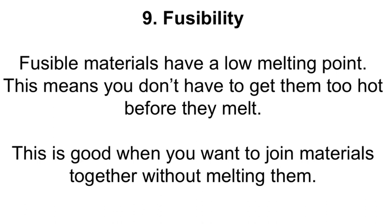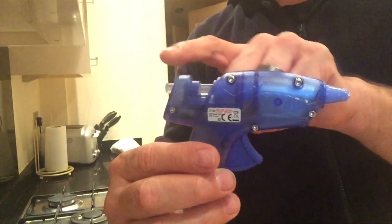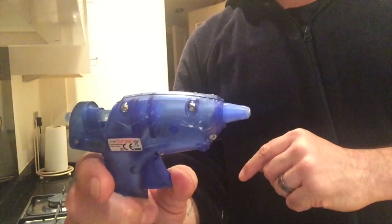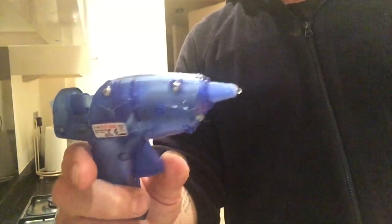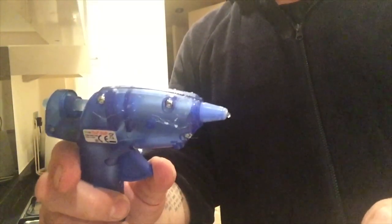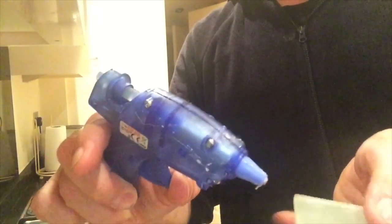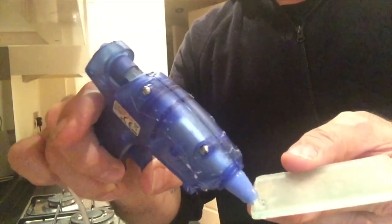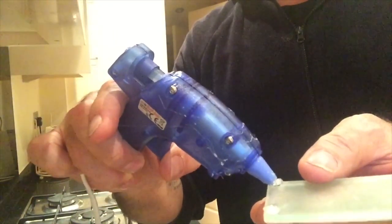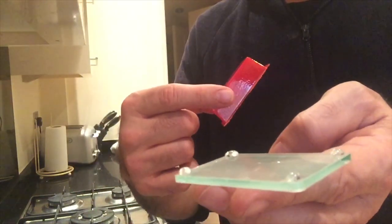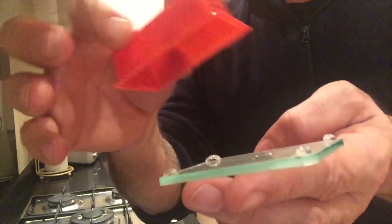Property number nine is fusibility — fusible materials have got low melting points, things like hot glue and solder, meaning you can join other things together quite easily. Hot glue guns work by melting solid hot glue sticks through a heater. Hot glue is called fusible because it has a low melting point — roughly 110°C — which is much lower than the melting points of the plastics it's used to stick together, such as acrylic and high impact polystyrene. Because it has a lower melting point, it doesn't melt those materials when you're gluing them.